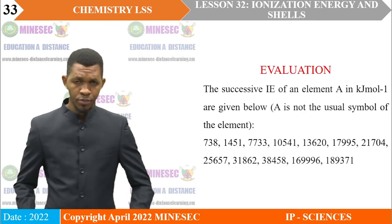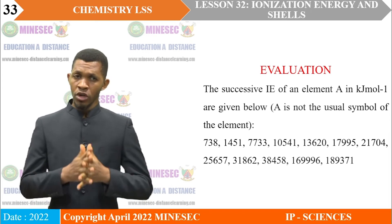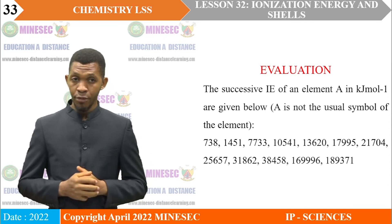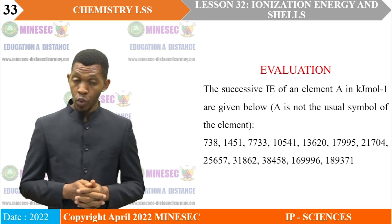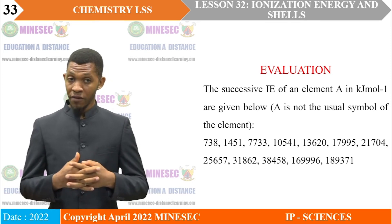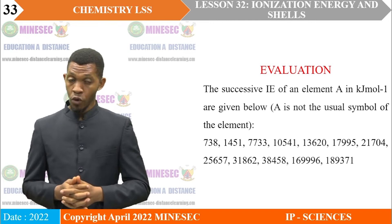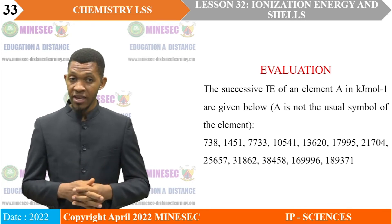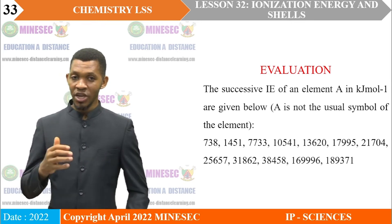Evaluation: to know how well you have understood this lesson, answer this question. The successive ionization energies of an element A in kJ/mol are: 738, 1,451, 7,733, 10,541, 13,620, 17,995, 21,704, 25,657, 31,862, 38,458, 169,996, and 189,371.